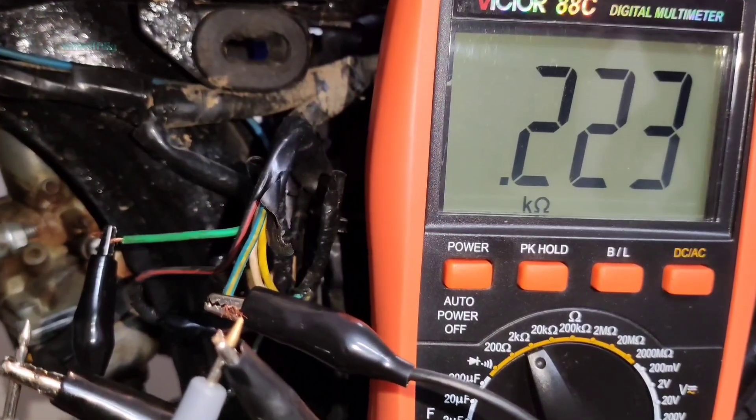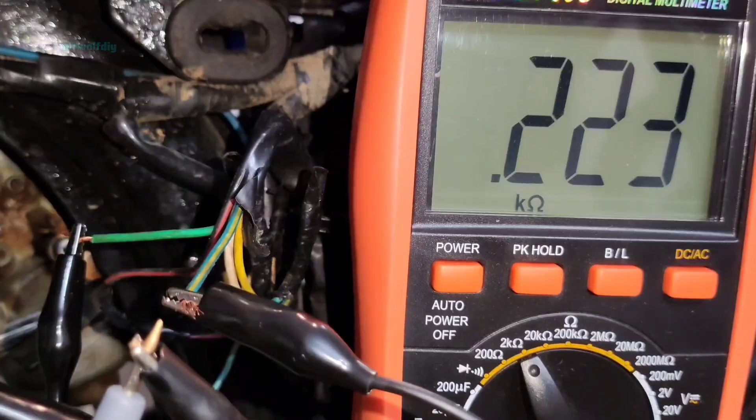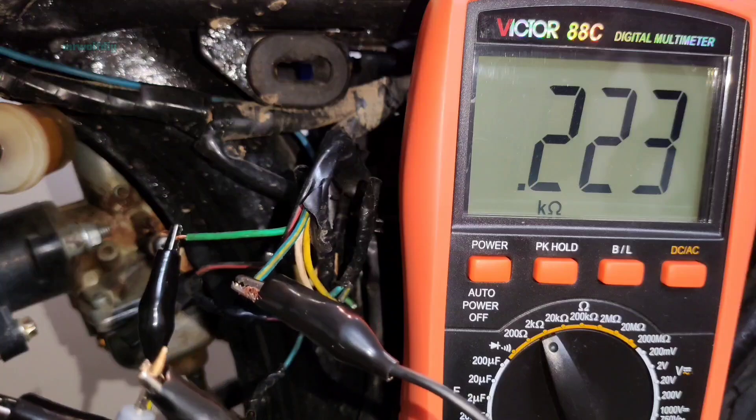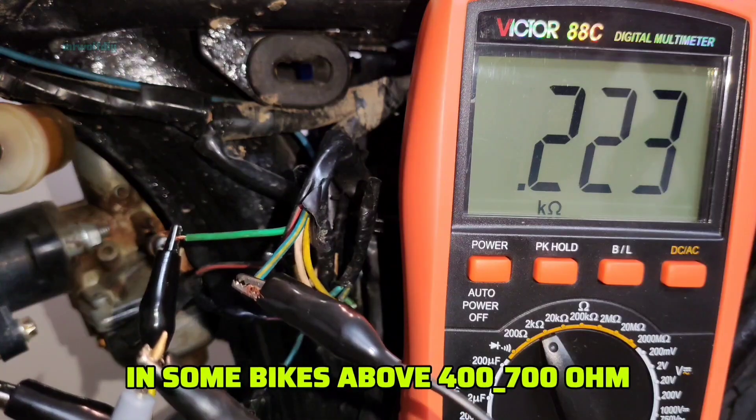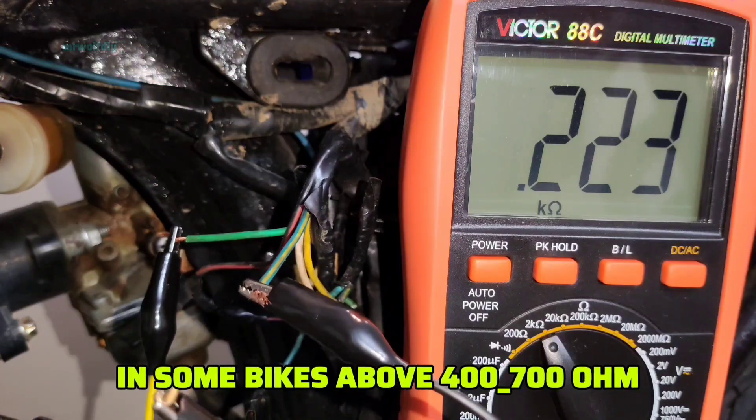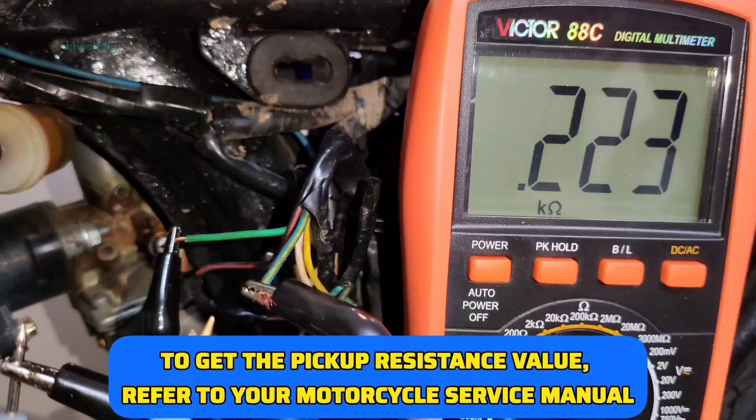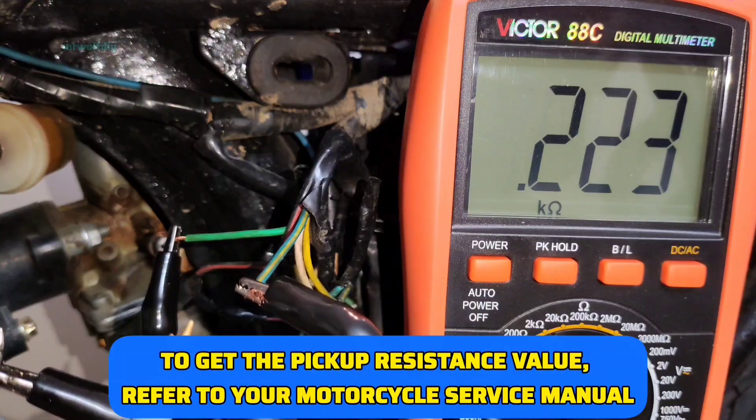Most common motorcycle, the pickup resistance is usually between 100 and 250 ohms. However, under some bikes, it can go up to 400 ohms, which is usually specified in the service manual.